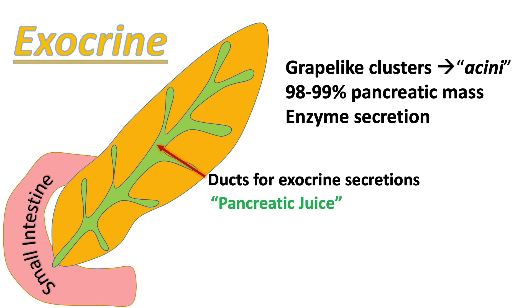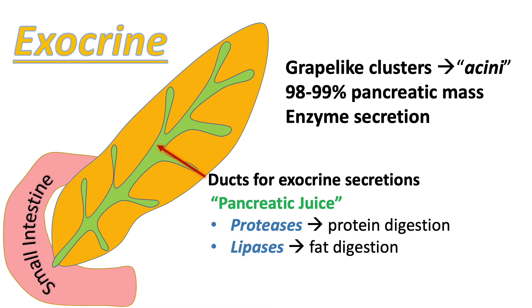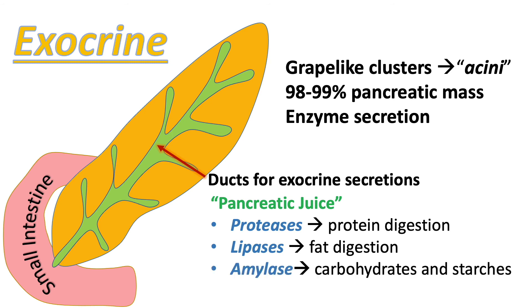These secretions are referred to as pancreatic juice. Within the pancreatic juice there are various enzymes: proteases for protein digestion, lipases for fat digestion, and amylases for carbohydrate and starch digestion. It also contains bicarbonate, which helps neutralize the acidic food or acidic chyme coming from the stomach into the small intestine.